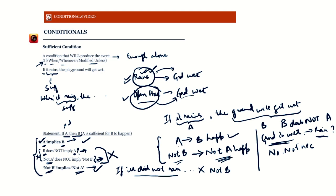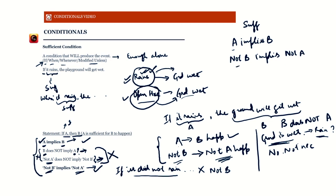In summary, for a sufficient condition — 'if/when/whenever' conditions — A implies B (if A happened, I know B happened for sure), and not-B implies not-A (if B did not happen, I know A did not happen). But the other two — B implies A, and not-A implies not-B — are not valid. These middle two are not implied; only the first and last are implied.